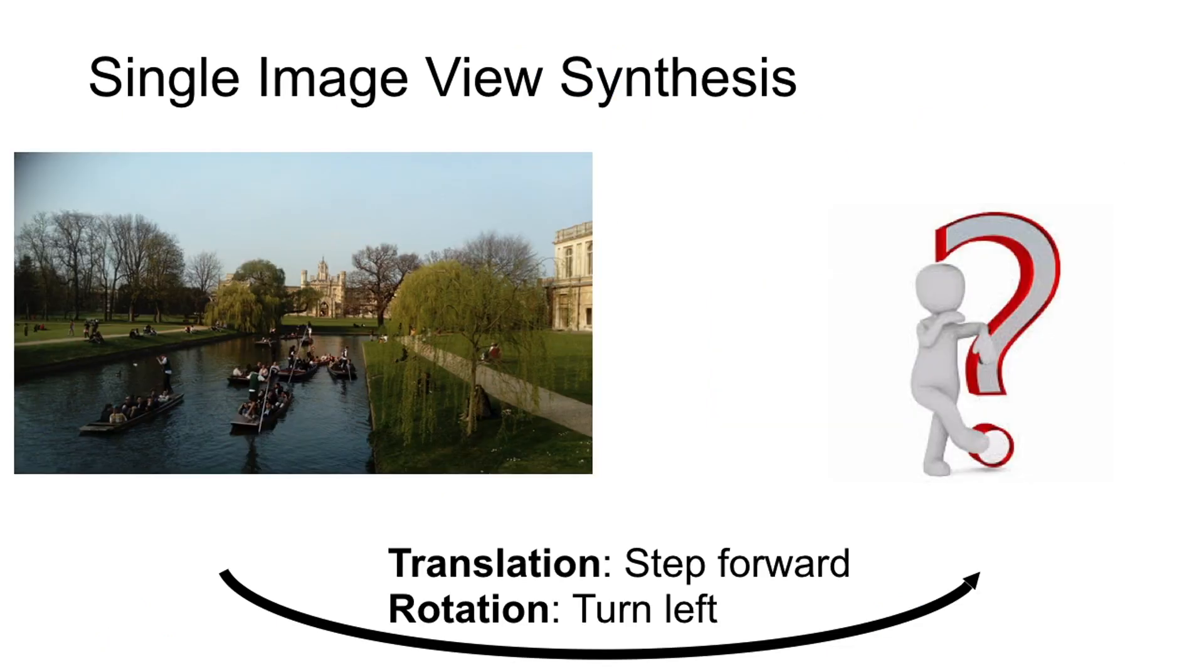Given a single image of a scene, we learn a model to address the question of what would happen if we changed viewpoint. For example, if we moved forward and then turned left.